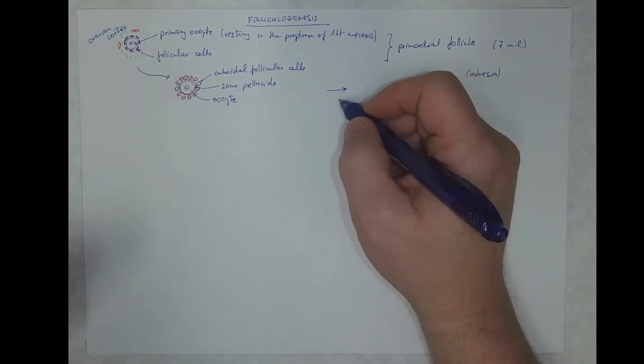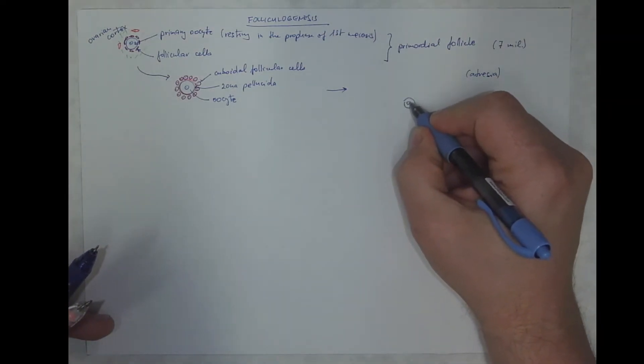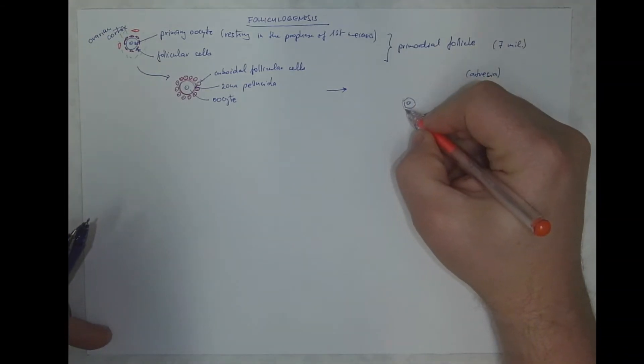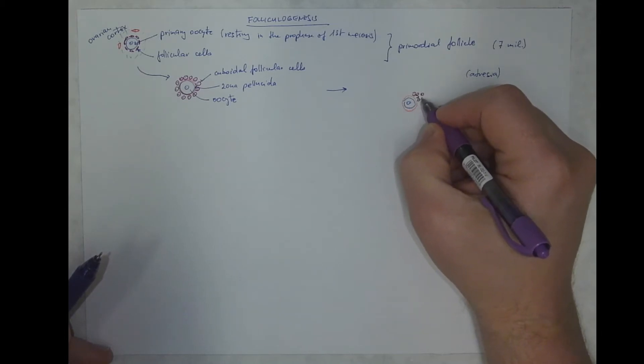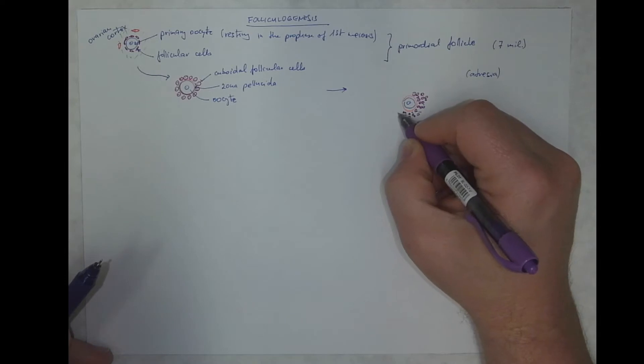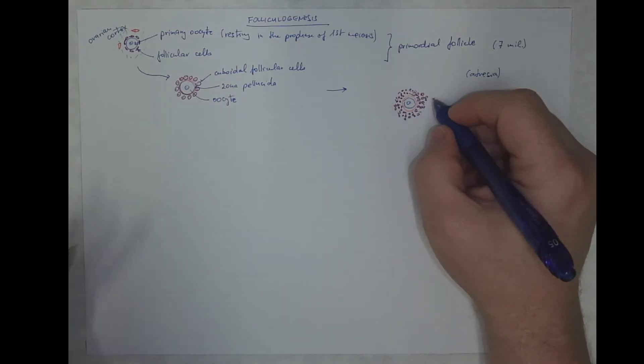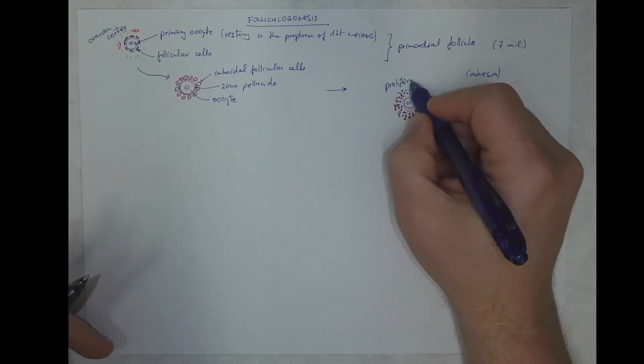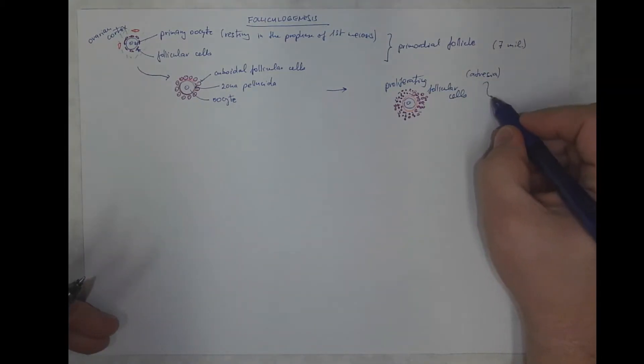During further growth, the follicle grows. So we got the oocyte, the primary oocyte, we got the zona pellucida. The follicular cells multiply, they become smaller, so we got now more layers and the cells will have a granular appearance. So we got proliferating follicular cells. And these stages both are called a primary follicle.